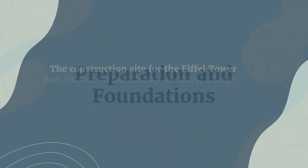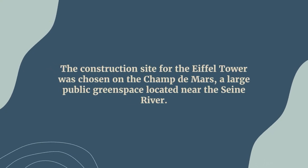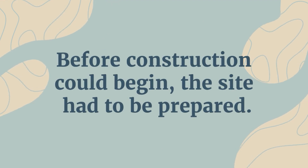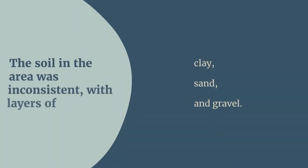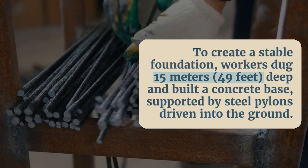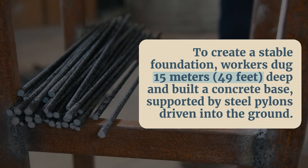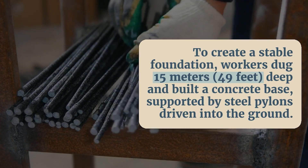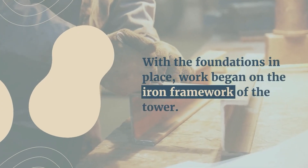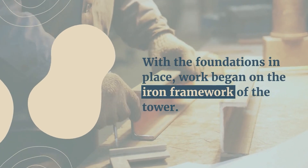Preparation and foundations: The construction site was chosen on the Champ de Mars, a large public green space located near the Seine River. Before construction could begin, the site had to be prepared. The soil in the area was inconsistent, with layers of clay, sand, and gravel. To create a stable foundation, workers dug 15 meters — 49 feet — deep and built a concrete base supported by steel pylons driven into the ground.